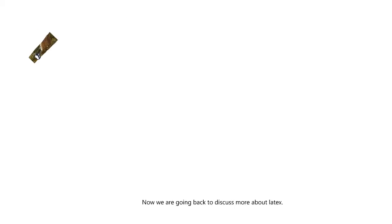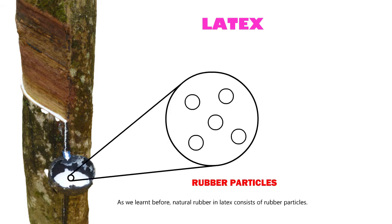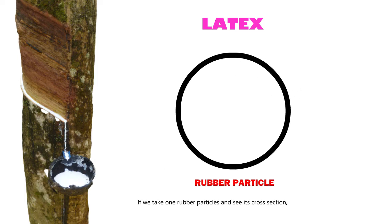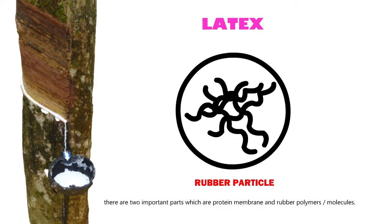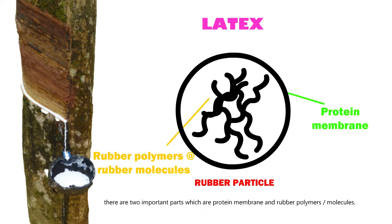Now we are going back to discuss more about latex. As we learned before, natural rubber in latex consists of rubber particles. If we take one rubber particle and see its cross-section, there are two important parts: the protein membrane and rubber polymers, or molecules.